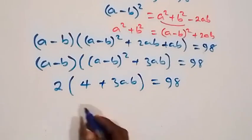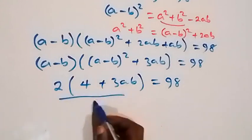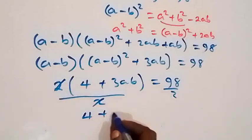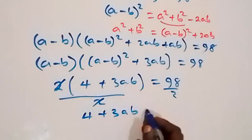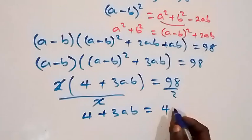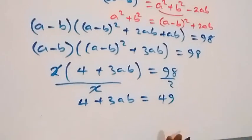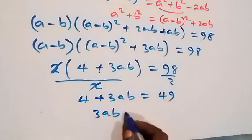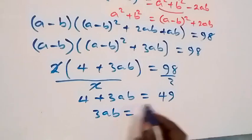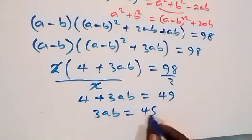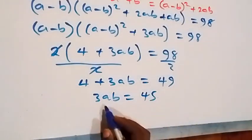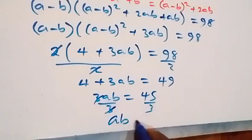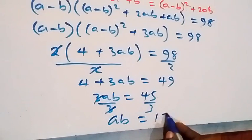Substituting A minus B equals 2, we divide 98 by 2, giving us (A minus B) squared plus 3AB equals 49. That is, 4 plus 3AB equals 49. Taking 4 to the other side, we have 3AB equals 49 minus 4, which is 45. Dividing both sides by 3, we get AB equals 15.